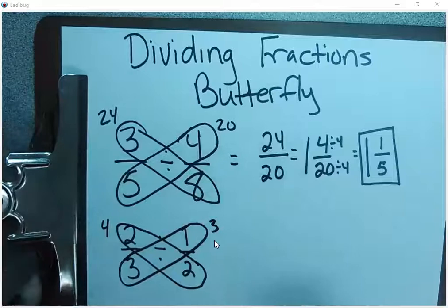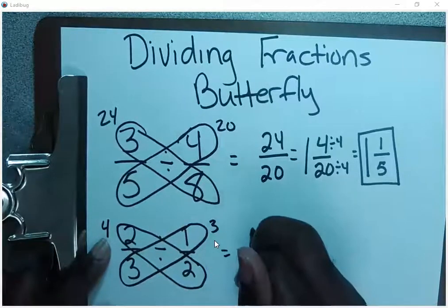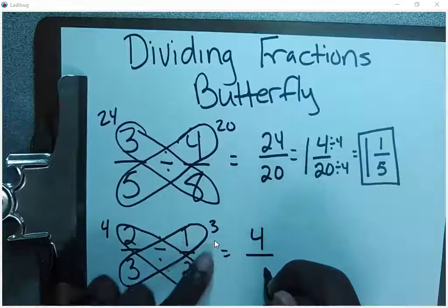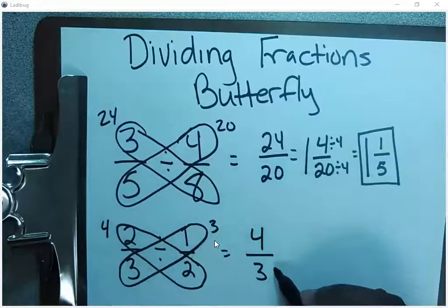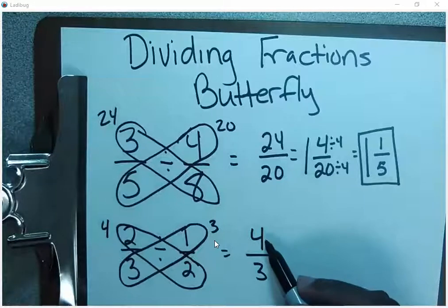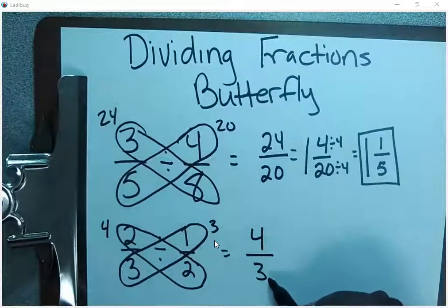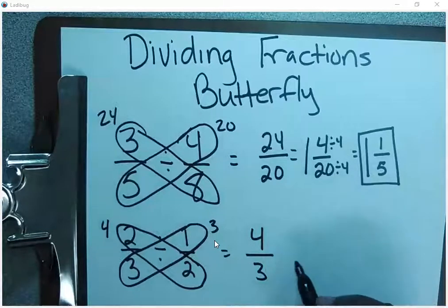As always, this product becomes your numerator. This product becomes your denominator. We have an improper fraction again because our numerator is bigger than our denominator. So we're going to turn this into a mixed number by simply dividing our denominator into our numerator.